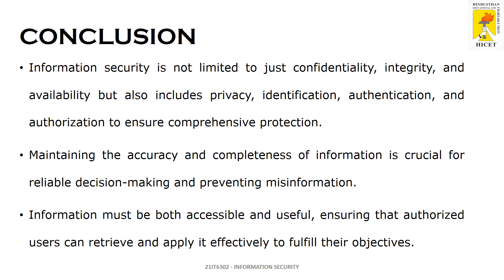In concluding remarks, information security is not limited to just CIA — confidentiality, integrity, and availability. It also has additional characteristics like privacy, identification, authorization, authentication, possession, and accountability. Maintaining accuracy and completeness of information is very crucial for any decision-making process in any organization. Information must be accessible and useful, and authorized users must be able to retrieve and apply it effectively to fulfill their objectives. This covers the critical characteristics of information — we will discuss more in upcoming topics.